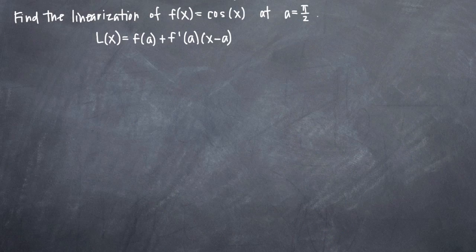In this particular problem, we've been asked to find the linearization of f of x equals cosine of x at the point a equals pi over 2. Remember that finding the linearization is the same thing as being asked to find the linear approximation of a function at a point. So either way, linearization or linear approximation, we're going to be performing the same process using the same formula.